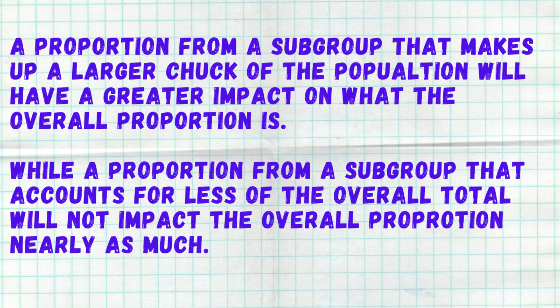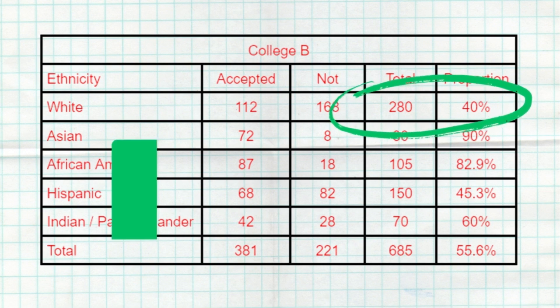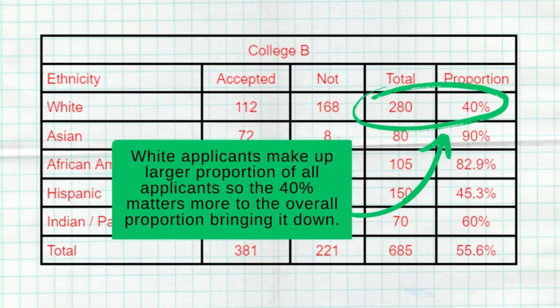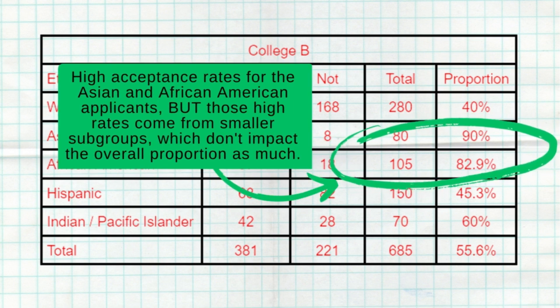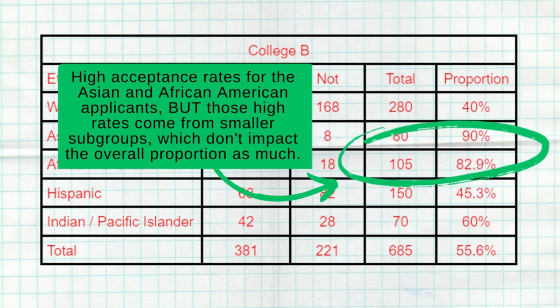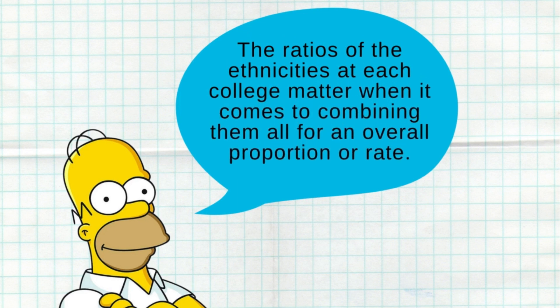That's causing the overall average for College A to be higher. College B, on the other hand, has a larger number of white applicants — 280 out of the total 685 applicants — while they also have the lower admission rate at 40%. For College B, its highest acceptance rates are for Asian and African American students, but overall they have fewer of those students. In fact, combining the Asian and African American students together doesn't even equal the amount of white applicants at College B. The 40% from the white applicants is worth more or heavier than the 82.9% acceptance rate for African American students. When you combine them, the different ethnicity ratios influence the overall acceptance rate, leading to the reversal of the trend and pattern that we see.